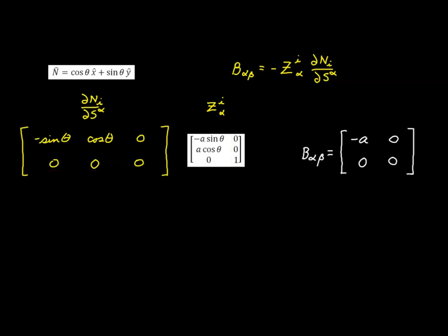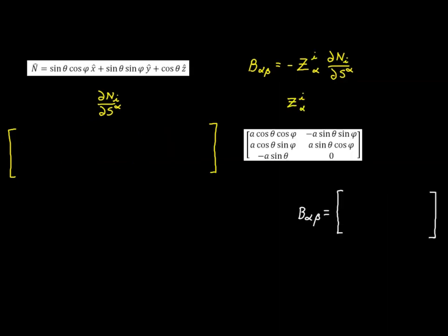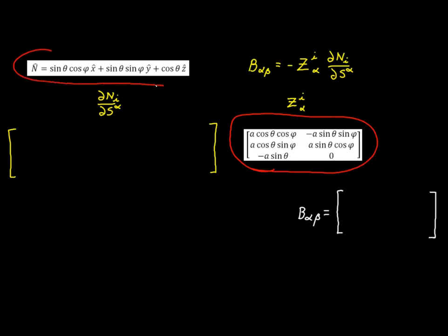That's how you find the curvature tensor, and this is the result for the cylindrical surface. Moving on, let's take a look at the spherical surface. For the spherical surface, this is the shift tensor and this is the normal.